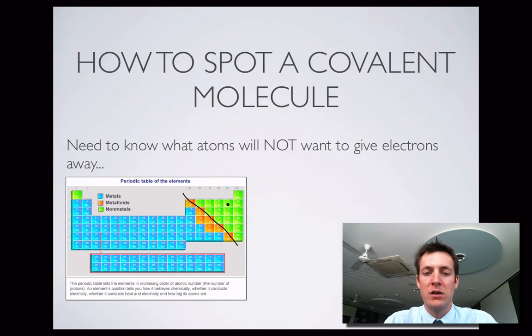So the elements with high electronegativity, those ones over here that attract electrons strongly, the non-metals. So if ever you've got two non-metal elements combined together, they're going to form covalent bonds because they're not keen to give electrons away.